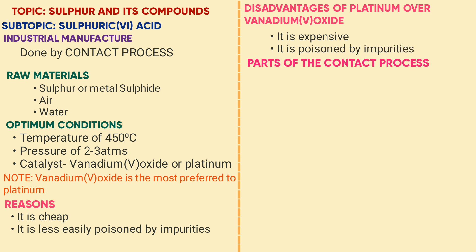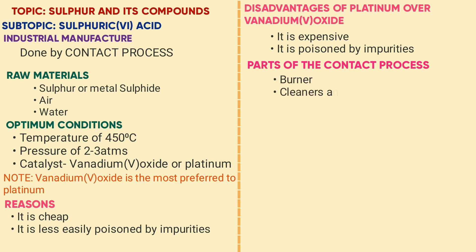Next we look at the parts of the Contact Process: the burner, cleaners and dryers, heat exchanger, catalytic chamber, absorption tower, and dilution chamber.